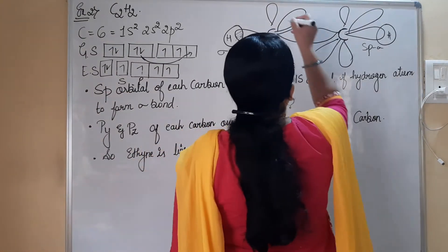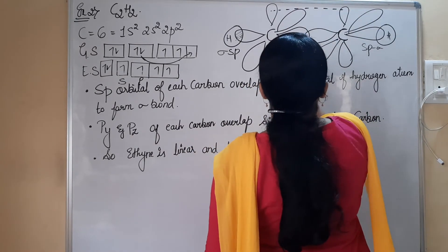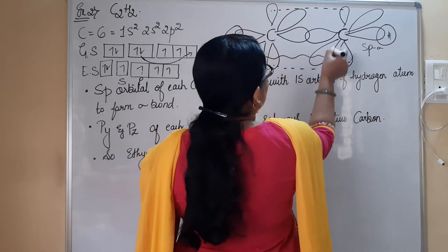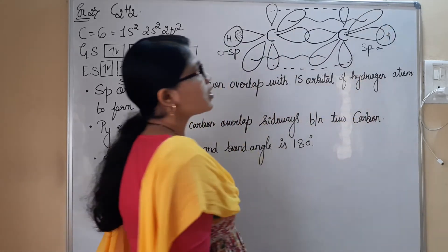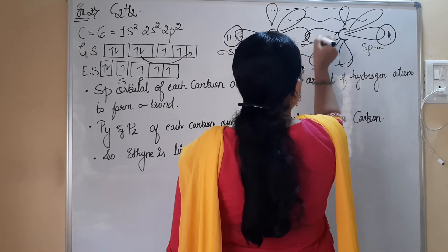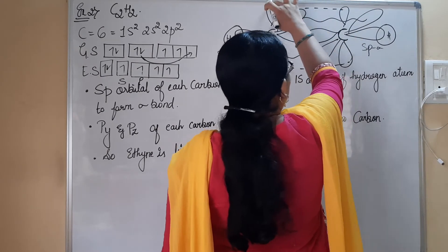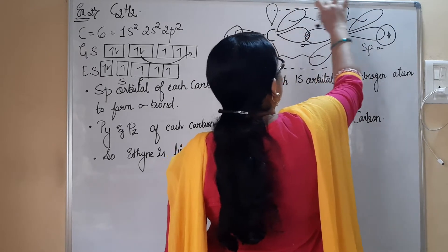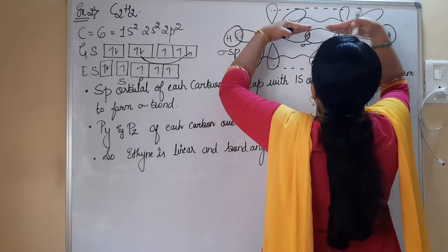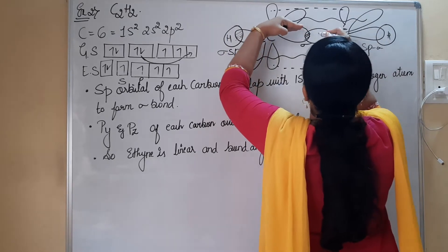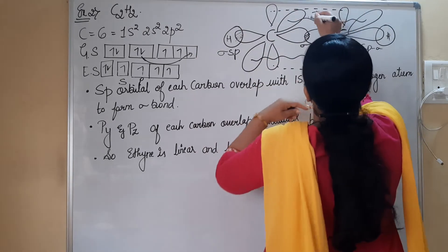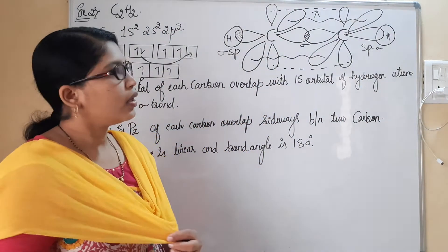In the YY combination, the PY orbitals combine sideways. Similarly, the PZ orbitals also combine sideways. Between the two carbon atoms, the axial head-on combination forms a sigma bond, while the sideways YY and ZZ combinations form pi bonds. So between the two carbons, we have one sigma bond (from SP-SP axial overlap) and two pi bonds (from PY-PY and PZ-PZ sideways overlap). This gives us the structure of C₂H₂ after hybridization.